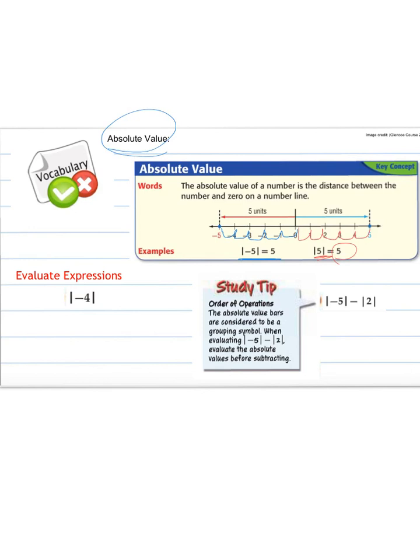An example here, negative 4. If we looked at a number line and we counted how many spots negative 4 is from 0, we would know it is 4 spots away. So the absolute value of negative 4 is 4.